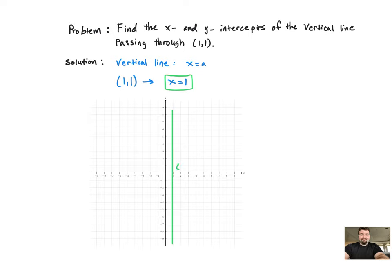Now notice it never crosses the y axis and only crosses the x axis one time and that's at the point. So just by observation we can see that the x intercept is at that point, and that the y intercept does not exist.